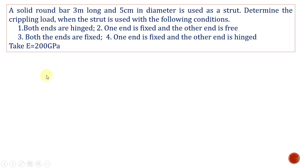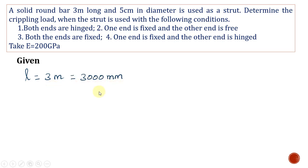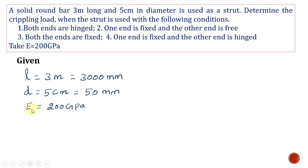Let us write the given data. The length of the column is 3 meters, which is 3000 mm. The diameter of the column is 5 centimeters, which converts to 50 mm. The Young's modulus of the material is 200 GPa.